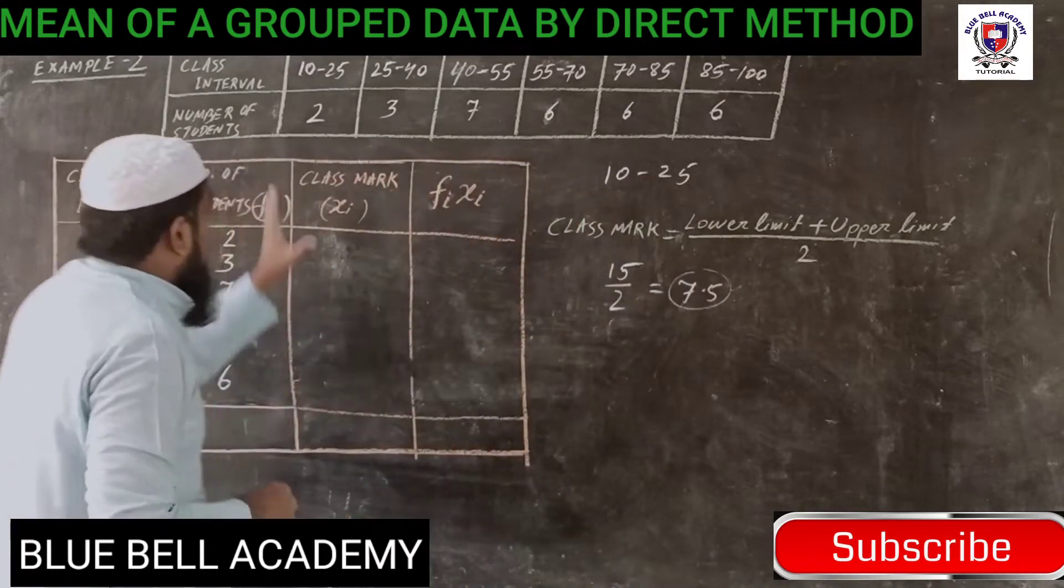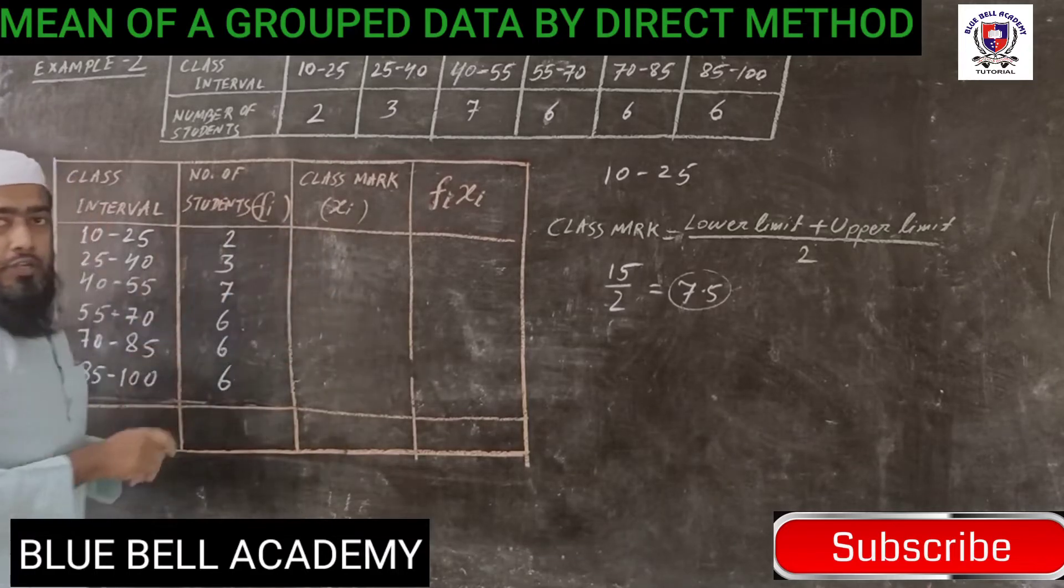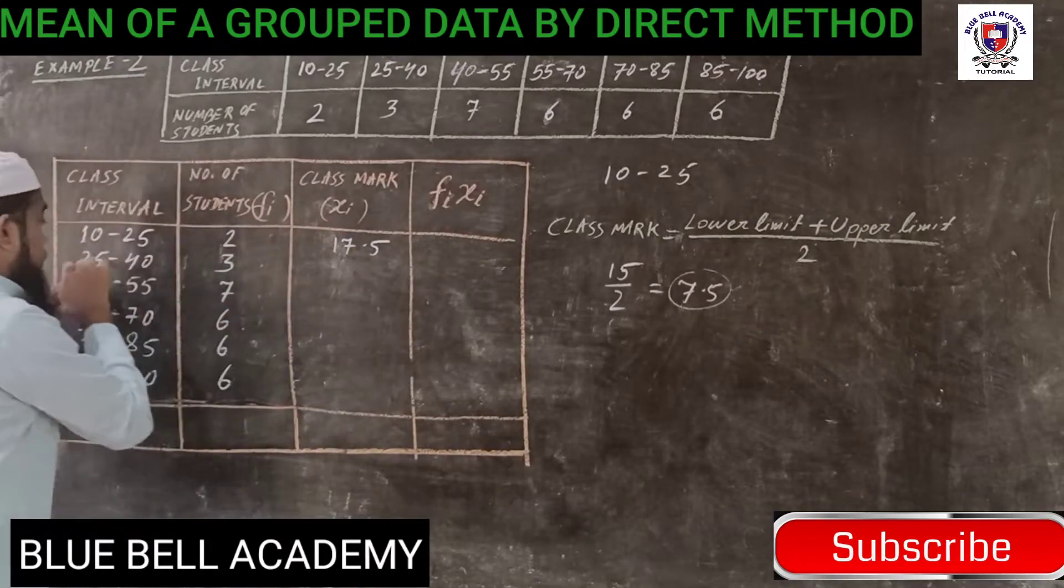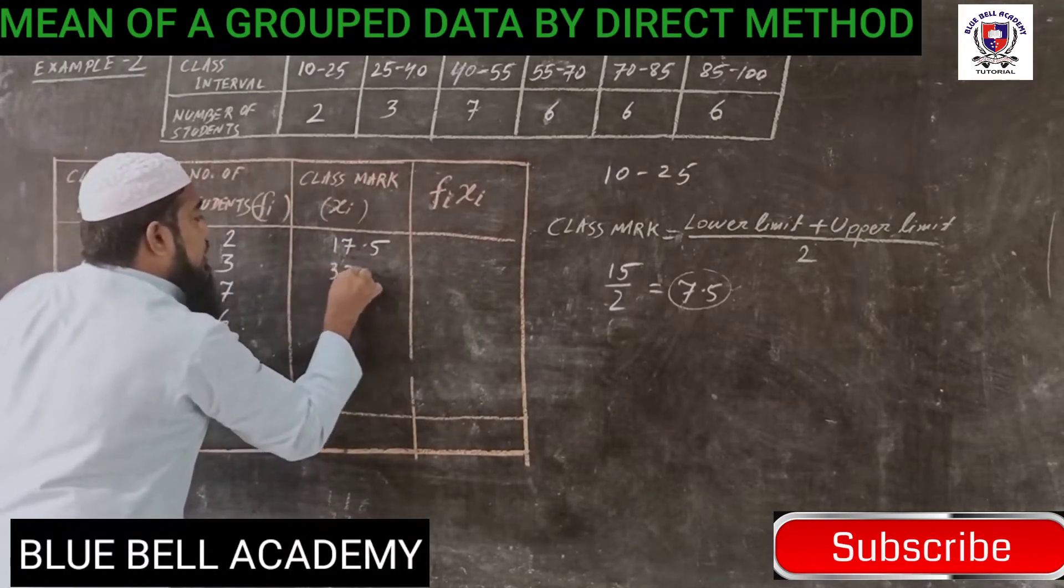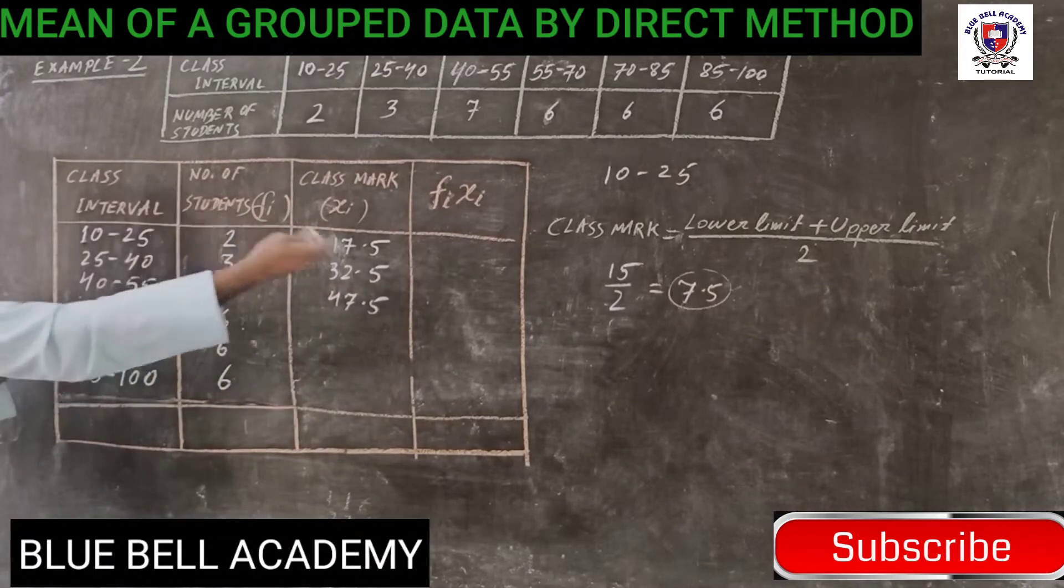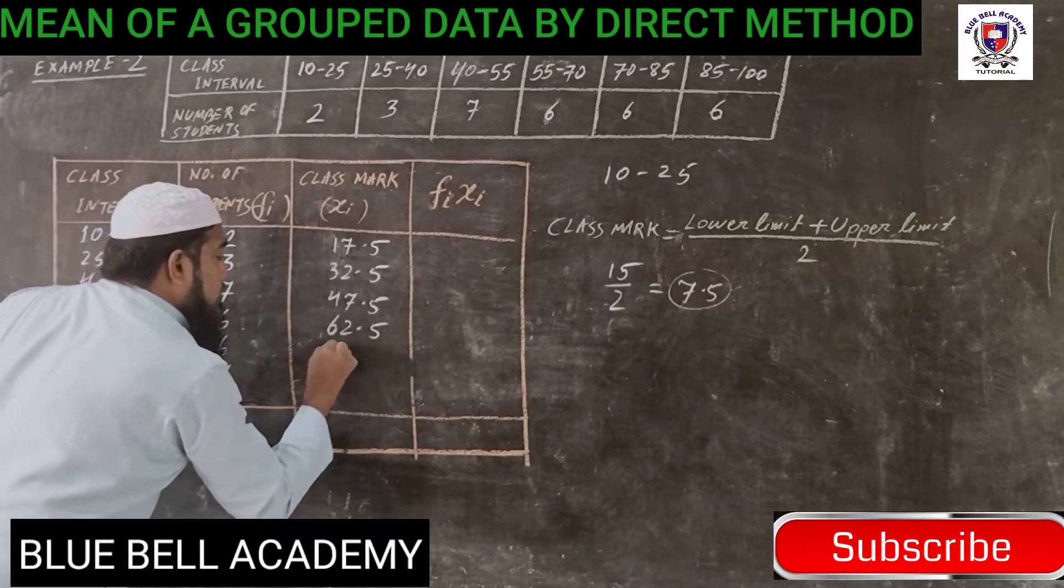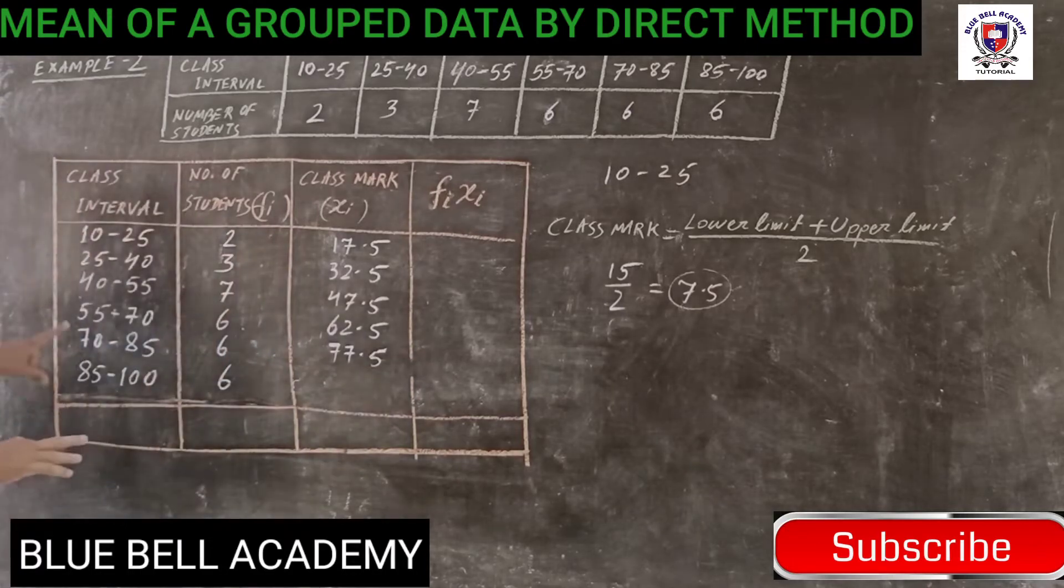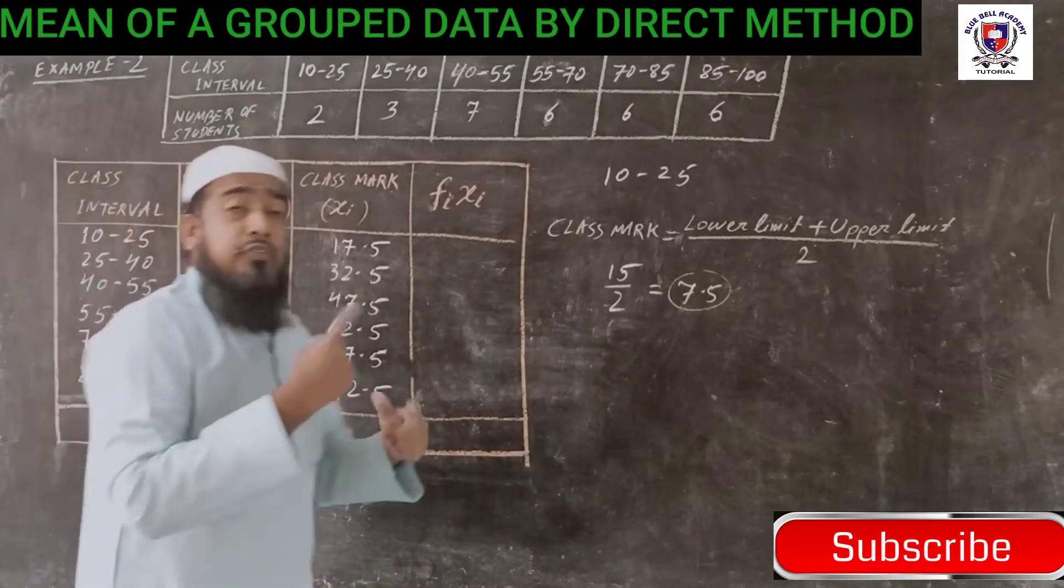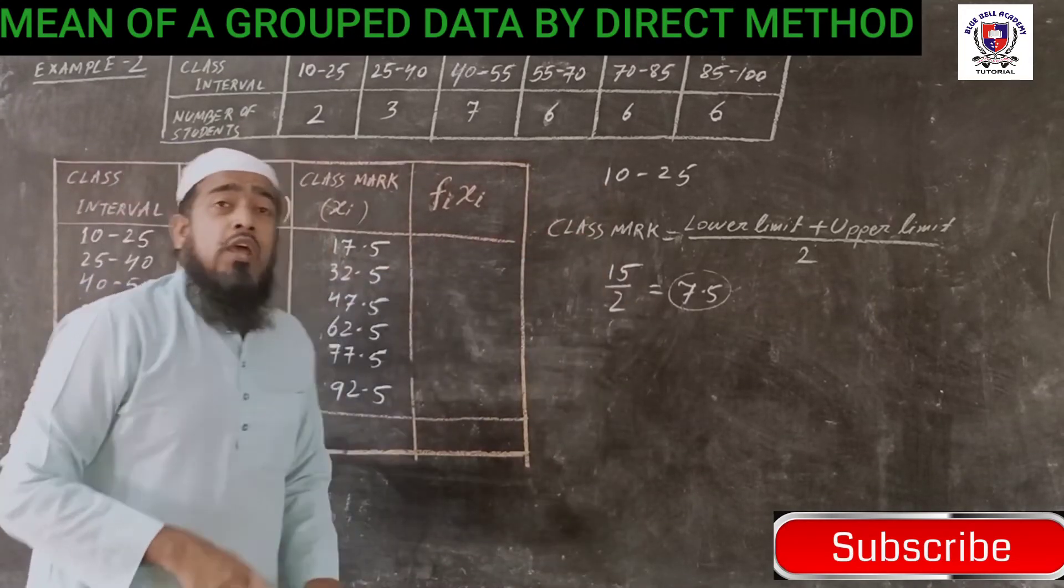Now what to do? To write the class mark, you take this 7.5 and add to all the lower limits and write it. For example, 10 plus 7.5 is 17.5. Then 25 plus 7.5 is 32.5. Then 40 plus 7.5 is 47.5. Then 55 plus 7.5 is 62.5. Now 70 plus 7.5 equals 77.5. And 85 plus 7.5 is 92.5. This is the easiest method. If you solve by this way, your time will be saved.